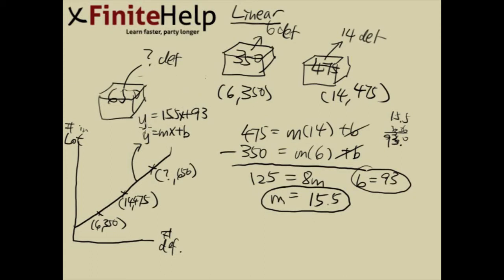So to kind of explain this in more of an intuitive way, what does this actually mean? This means that when you have 93 in the lot, there's going to be zero defective. And once you go up beyond 93, for every 15.5 you add into the lot, there is going to be one defective.